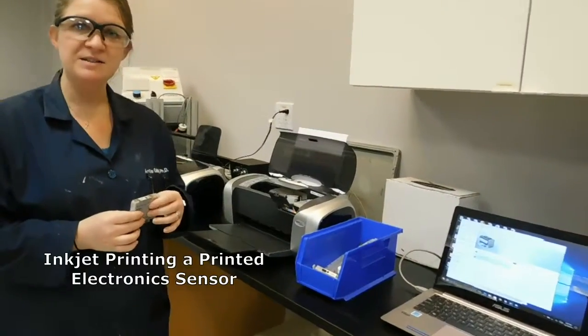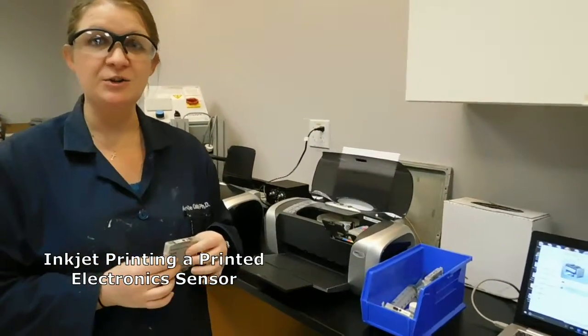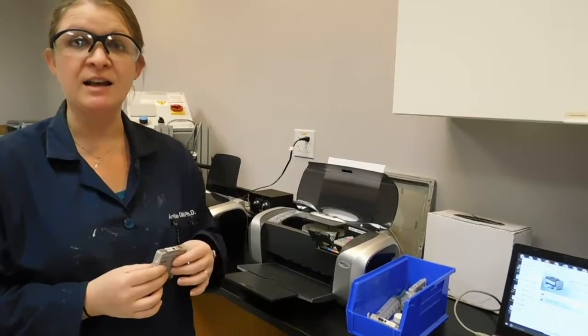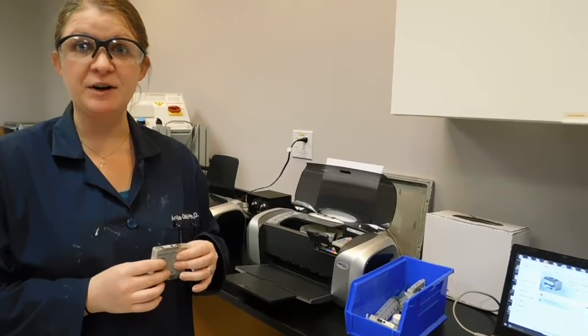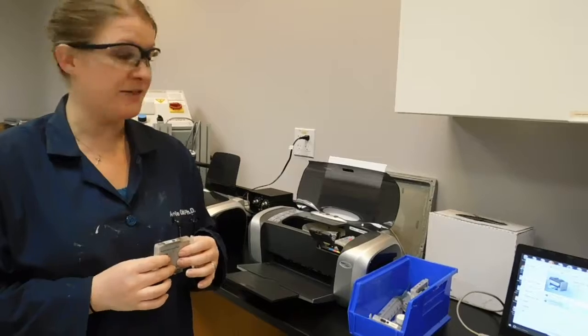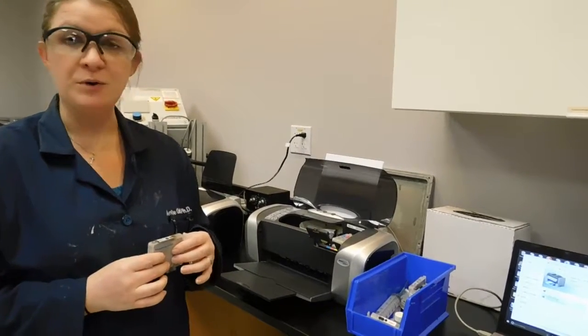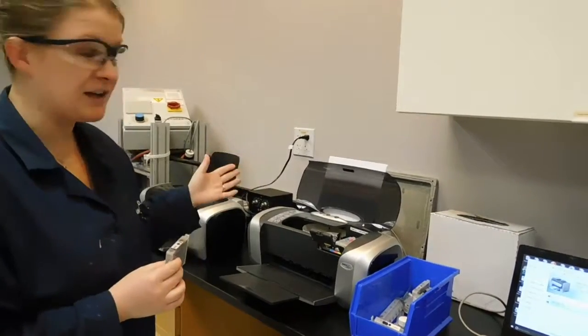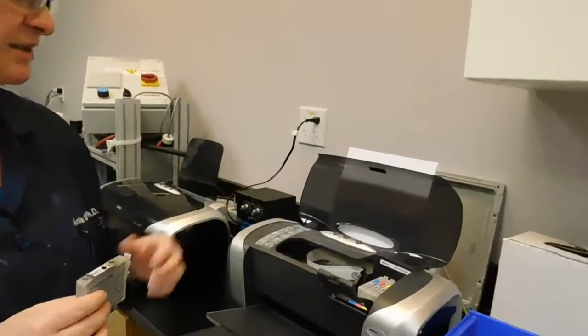Today we're going to print a capacitive sensor using inkjet printing using both silver and carbon ink. The silver ink will be for the metallic sensing part and the carbon ink is going to be for the resistor. We're going to print these one over the other using a very simple piezo desktop printer.